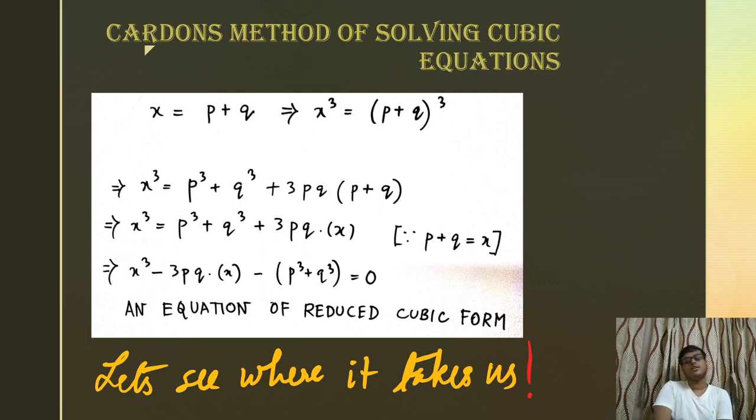Cardan's method of solving cubic equations. First of all let us take x, the variable of our concern, to be p + q. Let's cube it: (p + q)³ and expand it. You get p³ + q³ + 3pq(p + q), where I am substituting x in place of p + q, which takes me to the equation x³ - 3pqx - (p³ + q³) = 0, which is an equation of reduced cubic form.